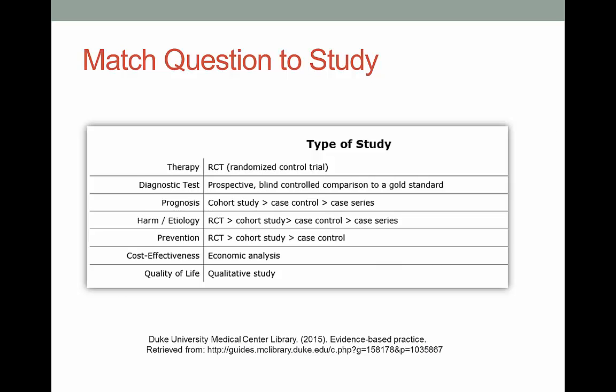Once you know what type of question you have, it's time to move on to this table. It might be a bit alarming if you're unfamiliar with the study types — we will be coming back to this in detail in the presentation on searching for evidence-based information. The point of this chart is to help you line up your question based on the study type with the research that can best answer your question.